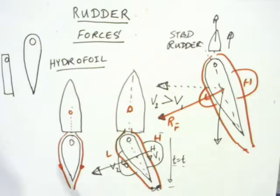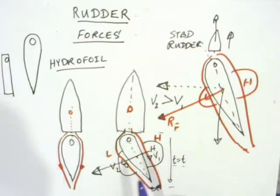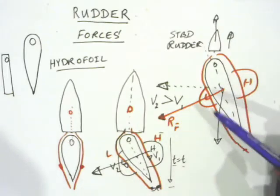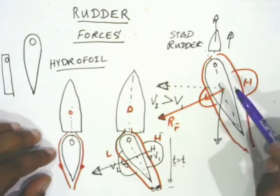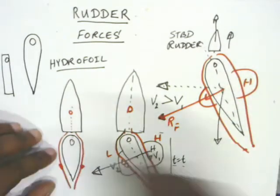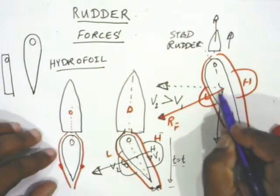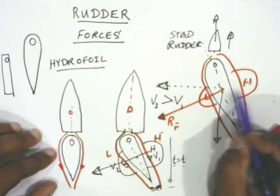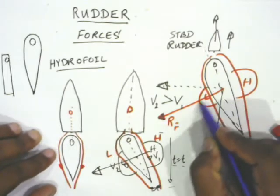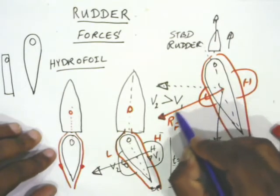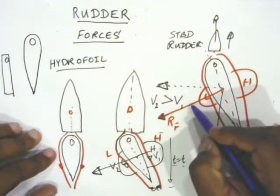Good day everybody, welcome back. In the previous lecture we looked at the forces acting on the rudder — why high pressure and low pressure are created. Please go through the previous lecture to understand why this is happening. In this lecture we are going to look at the components of this rudder force. The rudder force is created because of the high and low pressure difference, and this resultant force is divided into two components.